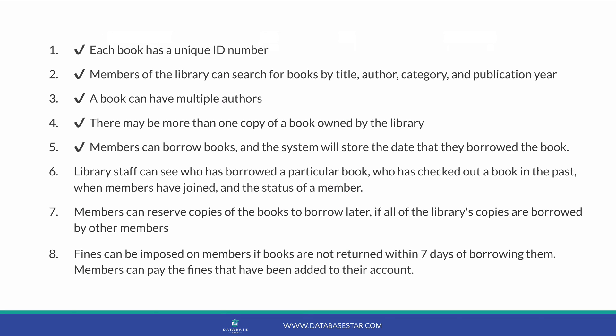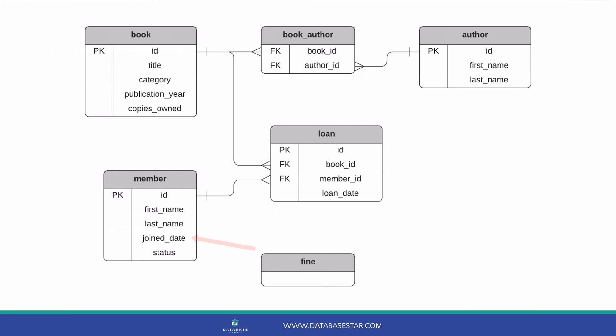Requirement 6 is about what librarians can see. They should be able to see who has borrowed a book, and who has checked out a book in the past — both achievable with our current design. They can't yet see when members have joined or the status of a member. We can add a joined_date field to the member table to store the date a member joined. We can also add a status field, which can store values such as active, cancelled or suspended.